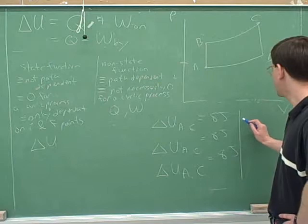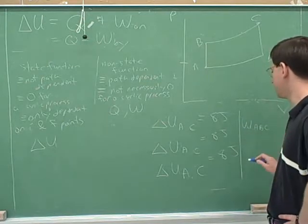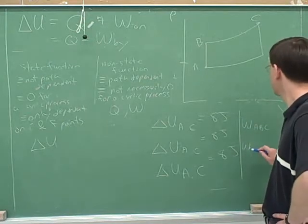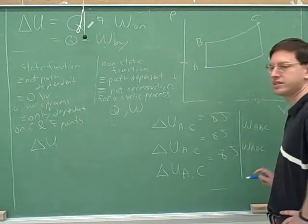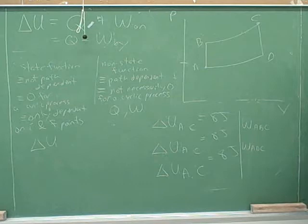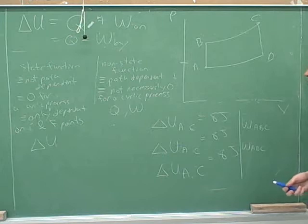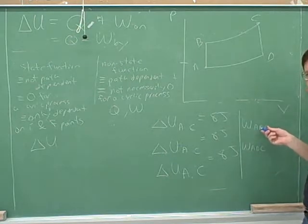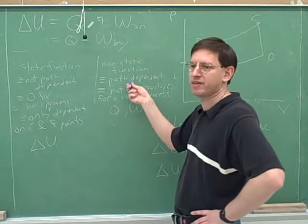Now, how about the work from A to B to C compared with the work from A to D to C? Are those going to be equal? No. Which work is bigger? A to B to C, because that has the greater area under it. So we definitely cannot leave out the middle letters for work. The middle letters are very important here because they tell us what path we're going on, and non-state functions are path dependent.